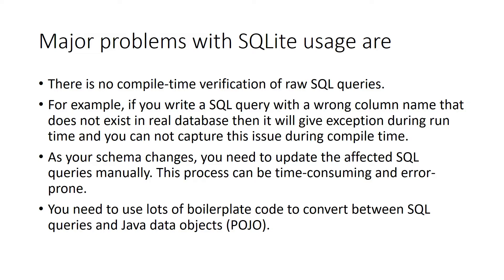In SQLite, if you write a wrong column name or table name in a query, it cannot be checked until runtime when the query runs. For example, if we write a SQL query with a wrong column name that doesn't exist in the real database, it will throw an exception at runtime. Also, as your schema changes, you need to update all affected SQL queries manually — if you forget to update, it will generate errors.